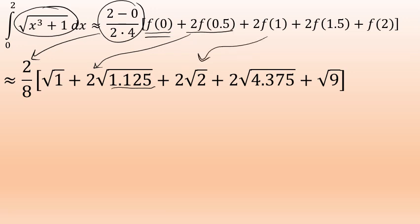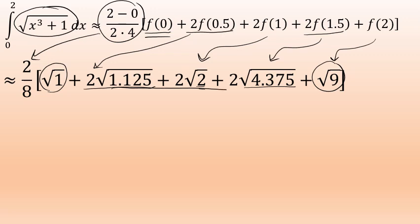The third term is 2 times f of 1: 1 to the third plus 1 equals 2. The fourth term is 2 times f of 1.5: f of 1.5 is the square root of 4.375. Finally, f of 2: 2 to the third power plus 1 gives the square root of 9. The first and last terms are rational numbers, but the three middle terms are irrational. Depending on the precision needed, you could leave your answer in radical form or approximate it. In this problem, we'll approximate to three decimal places.